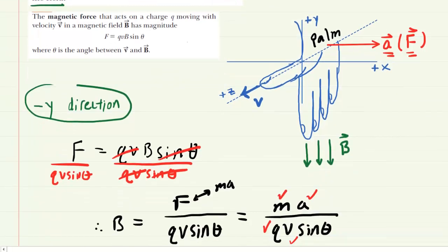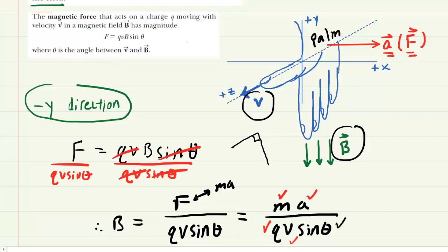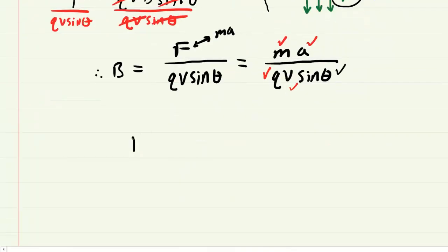Now the angle will be between the velocity and the magnetic field. The velocity is along the positive z direction and the magnetic field is along the negative y direction. Notice that the z-axis and the y-axis form a 90-degree angle. So in fact, the angle will be 90 degrees. So we know that as well. Let's go ahead then and plug in all the known values.